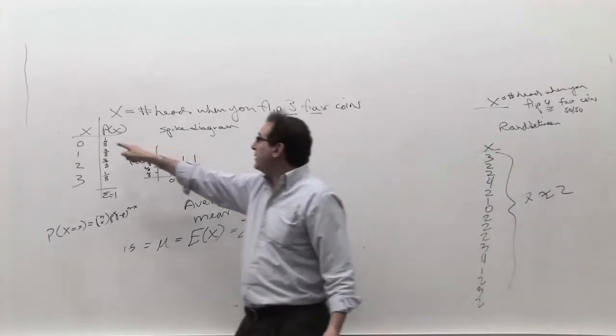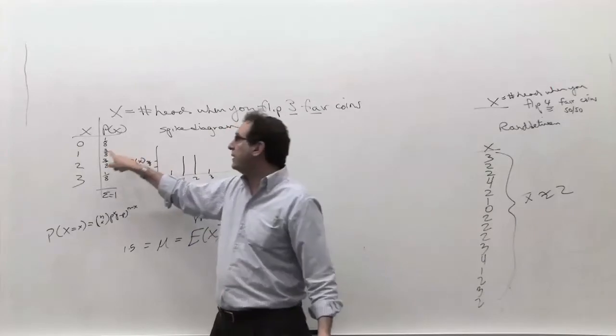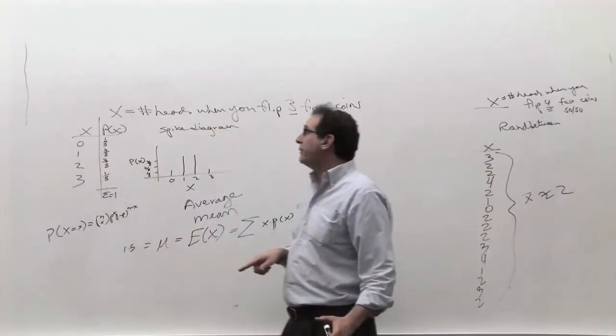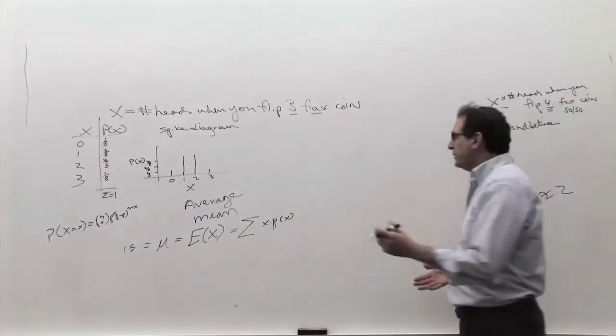So if you want to make a column, this times this is 0, 1 times 3 out of 8 is 3 out of 8, 2 times 3 out of 8 is 6 out of 8, and 3 times 1 out of 8 is 3 out of 8. Add them all together, and what are you going to get? Well, hopefully it comes out to 1.5, so let's see if that works out.